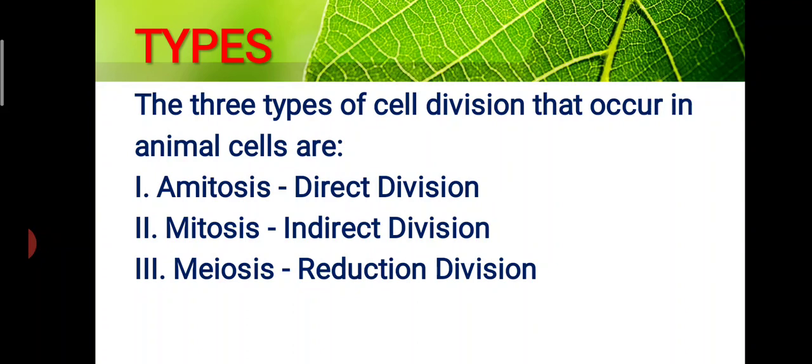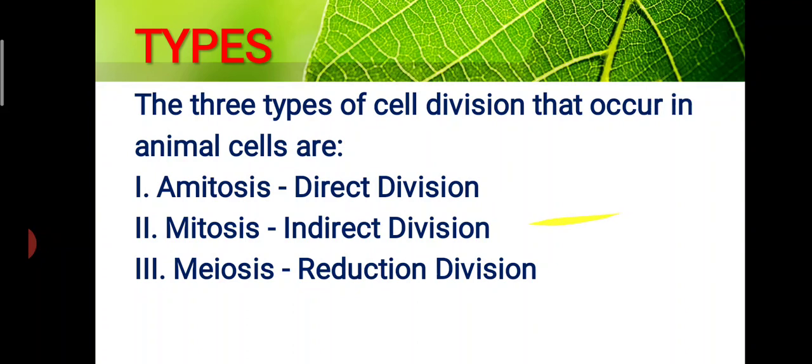One is amitosis, which is the direct division. Second, we have mitosis, which is the indirect division, and meiosis, which is the reduction division. We are going to discuss them one by one in detail. First, we have amitosis. It is the simplest mode of all cell divisions and it always occurs in unicellular animals, aging cells, and in fetal membranes.